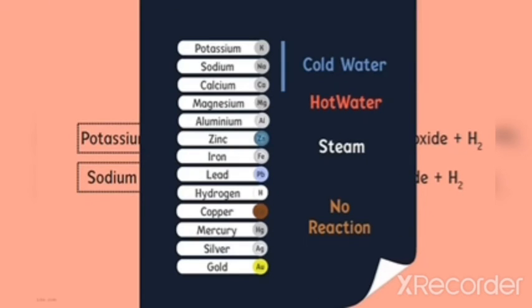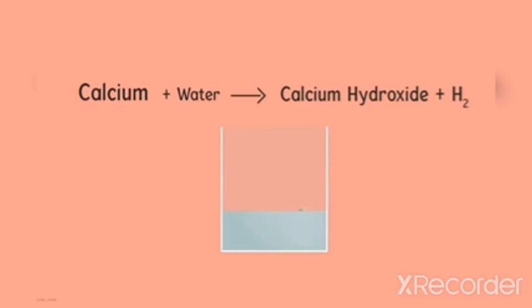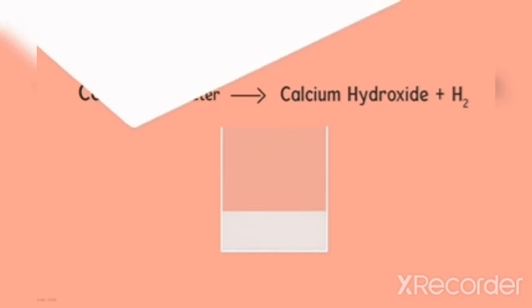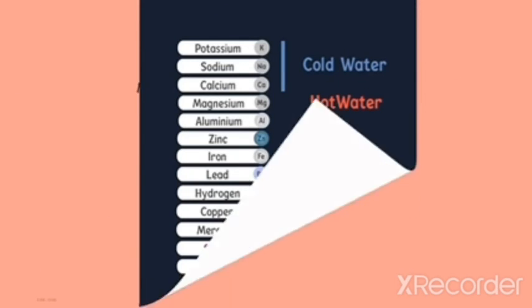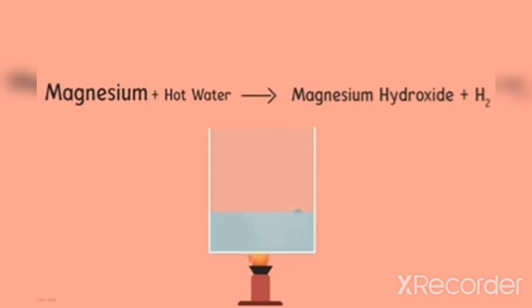Calcium also reacts with cold water, but the reaction is not as violent as with potassium and sodium — the heat is not enough for the hydrogen to catch fire. Calcium starts floating because bubbles of hydrogen gas stick to the surface of the metal. Magnesium does not react with cold water, but it reacts with hot water to form magnesium hydroxide and hydrogen gas, and similarly starts floating due to hydrogen bubbles sticking to its surface.